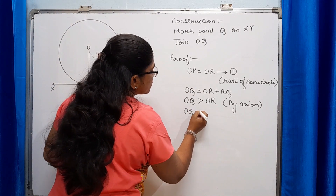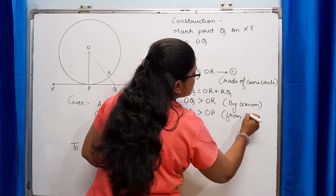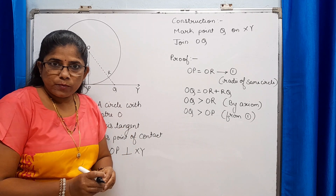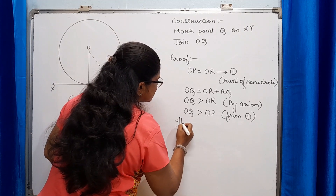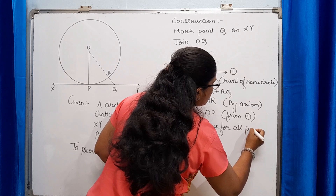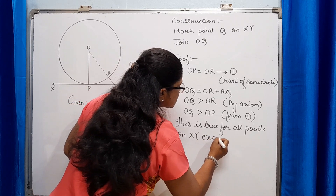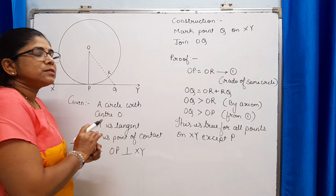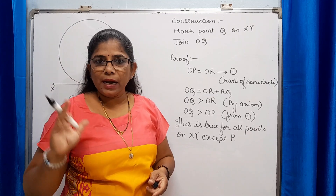So OQ is greater than OP, and this is going to be true for all points on XY except point P. This means that OP is the shortest distance between O and line XY.